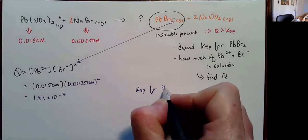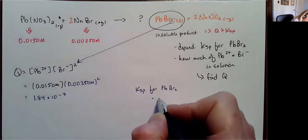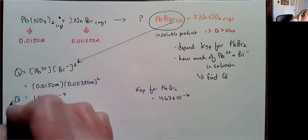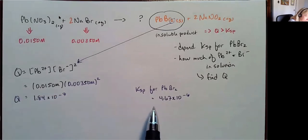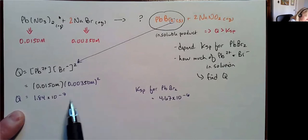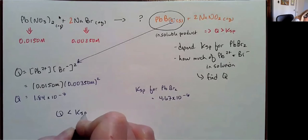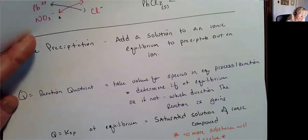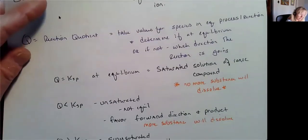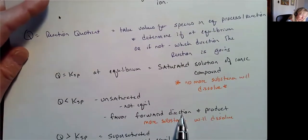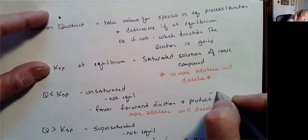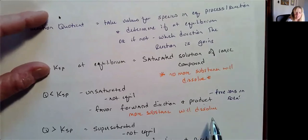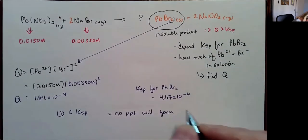I compare this to the Ksp for PbBr₂ from the table. Q is not equal to Ksp, so it's not at equilibrium, but Q is less than Ksp. If Q is less than Ksp, then I'm unsaturated, not at equilibrium, and I'm going to favor the forward direction and free ions in solution. So no precipitate will form.